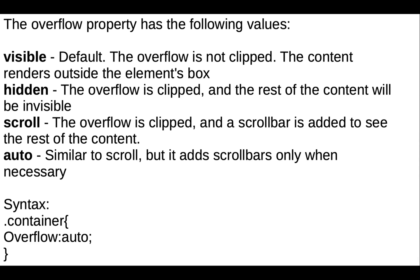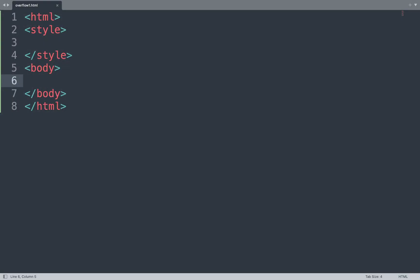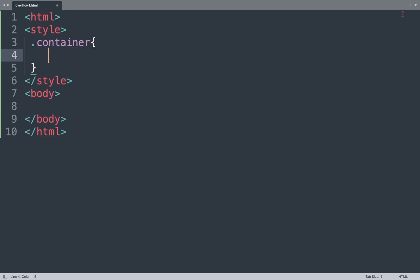The syntax is: make one class called 'container', and inside it add the overflow property with its value set to 'auto'. You can change this value to visible, hidden, scroll, or auto. Let's take one example of this overflow property — open the Sublime Text editor and make a class named 'container'.